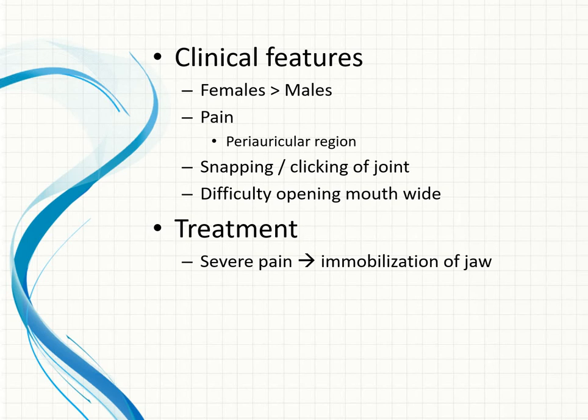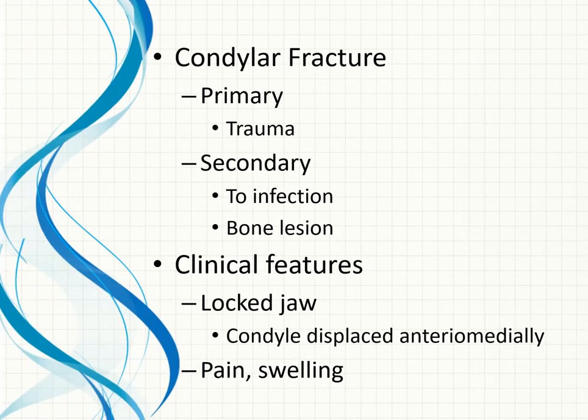These disc changes are more likely seen in females than males for unknown reasons. The most common area of pain is the periauricular region. There may be snapping or clicking based on whether disc displacement is with or without reduction, and the patient cannot open the mouth widely. In severe cases, the articular disc must be repositioned to its normal location and the jaw immobilized for a period of time to allow tissue regeneration.